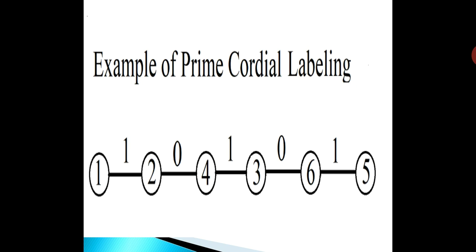We see that the number of edges labelled with 0 is 2 and the number of edges labelled with 1 is 3. So it satisfies the condition |EF(0) - EF(1)| ≤ 1, that is the number of edges labelled with 1 and the number of edges labelled with 0 differ by at most 1. So this is called an example of prime cordial labeling.